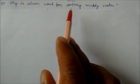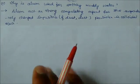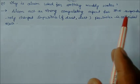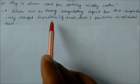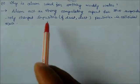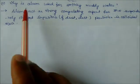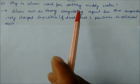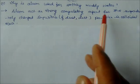Alum hydroxide is used for settling muddy water. Alum acts as a strong coagulating agent for suspended negatively charged impurities like dust and dirt particles in colloidal state. Alum collects all these particles, being positive, they coagulate and become heavy. When heavier, they settle as sediment at the bottom.